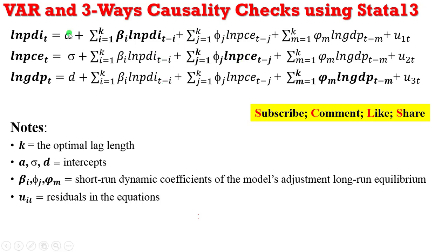So looking at the model specification here, you can see all the constants listed and these are the intercepts. The betas, the phi's, and the gammas indicate the short-run coefficients of the model's adjustment to long-run equilibrium, while the u's adjust the stochastic error terms or shocks in the language of VAR. So this is a simple form of specifying a VAR model.